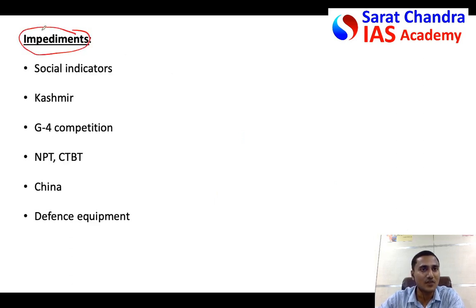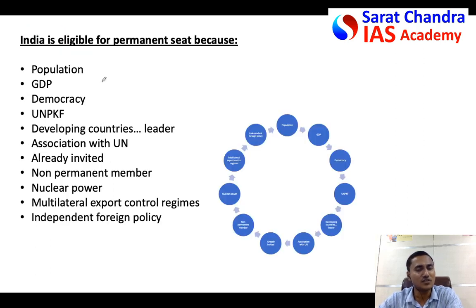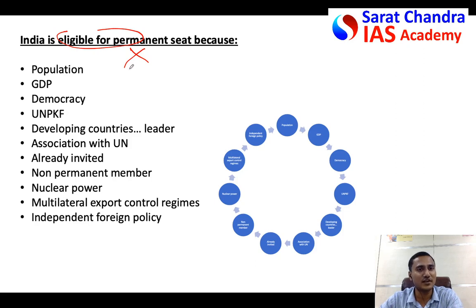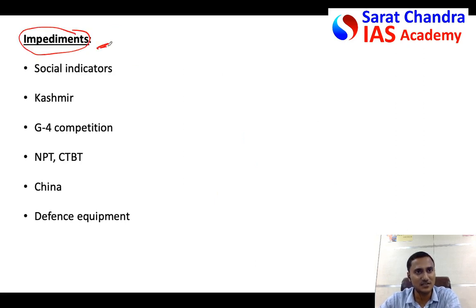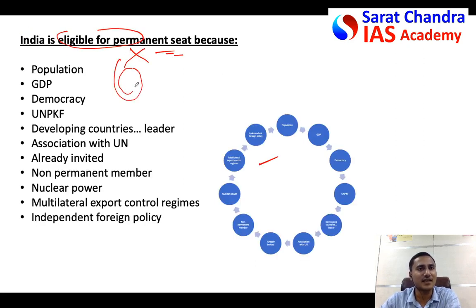Now the actual question asks what are the impediments for India to become a permanent member. Before addressing that, write a brief paragraph on why India is eligible. This is not the main question, so don't spend much time — just highlight key points or draw a quick diagram. Evaluators focus on what is actually asked, so keep this as a bridging paragraph and finish it in half a paragraph or with a diagram.